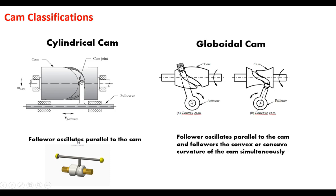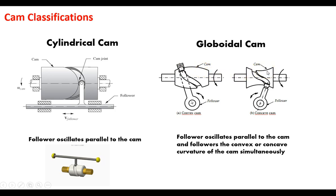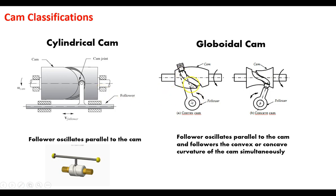Another type is the globoidal cam, which is similar to a cylindrical cam except it has either a convex or concave profile, giving an added degree of freedom to how the cam moves. You can see this one uses a pivoting follower — still follows the groove as with the cylindrical cam, but also follows this outer profile of the cam itself.